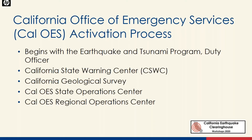We'll begin at the start. When an event happens, Cal OES has an earthquake and tsunami duty officer that immediately gets the information and starts coordinating. Our first call is to the California State Warning Center, and then we begin coordinating with the California Geological Survey to share technical information on faults, depths, and potential impacts. Staff are already looking at being deployed to the State Operations Center and then can be deployed to the Regional Operations Center based on need and the location of the event.